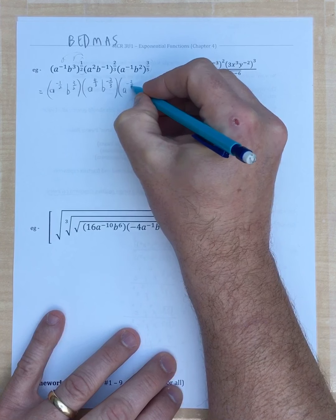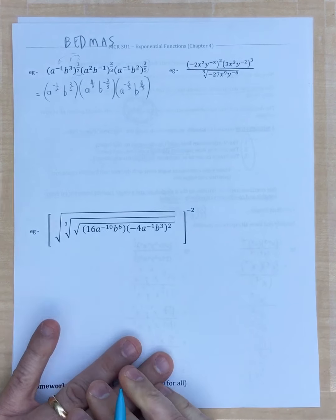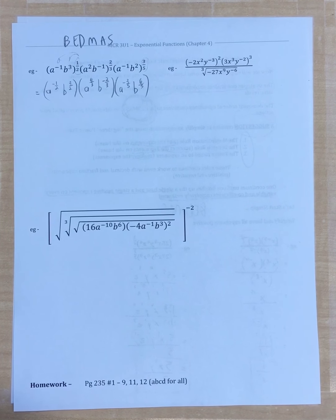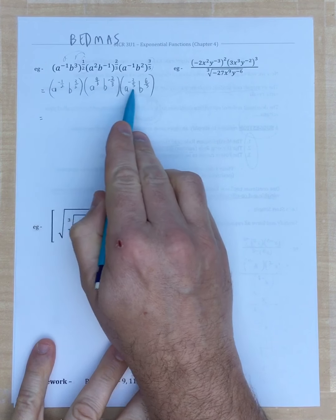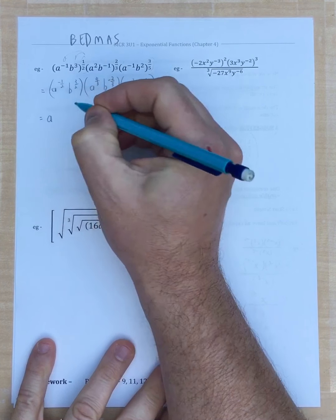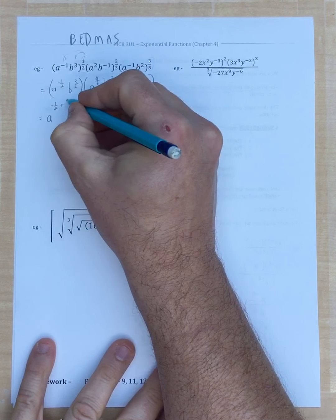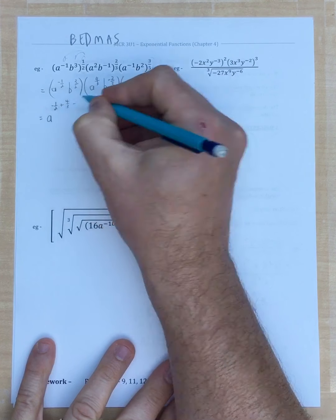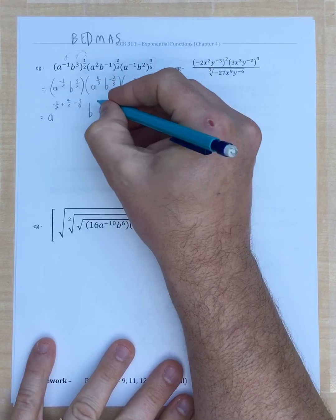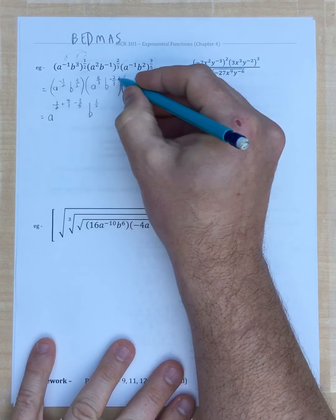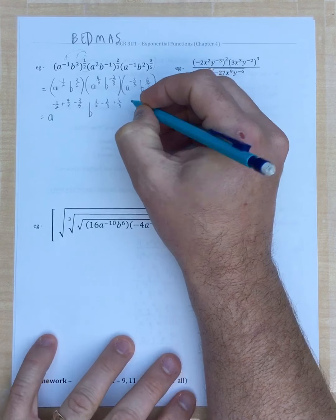For the third bracket, a to the negative one times three fifths is a to the negative three fifths; b squared times three fifths is b to the six fifths. Now because everything is multiplied, we combine the a's and b's separately by adding their exponents. For a: negative one half plus four thirds plus negative three fifths. For b: three halves plus negative two thirds plus six fifths. We'll need common denominators to combine these.